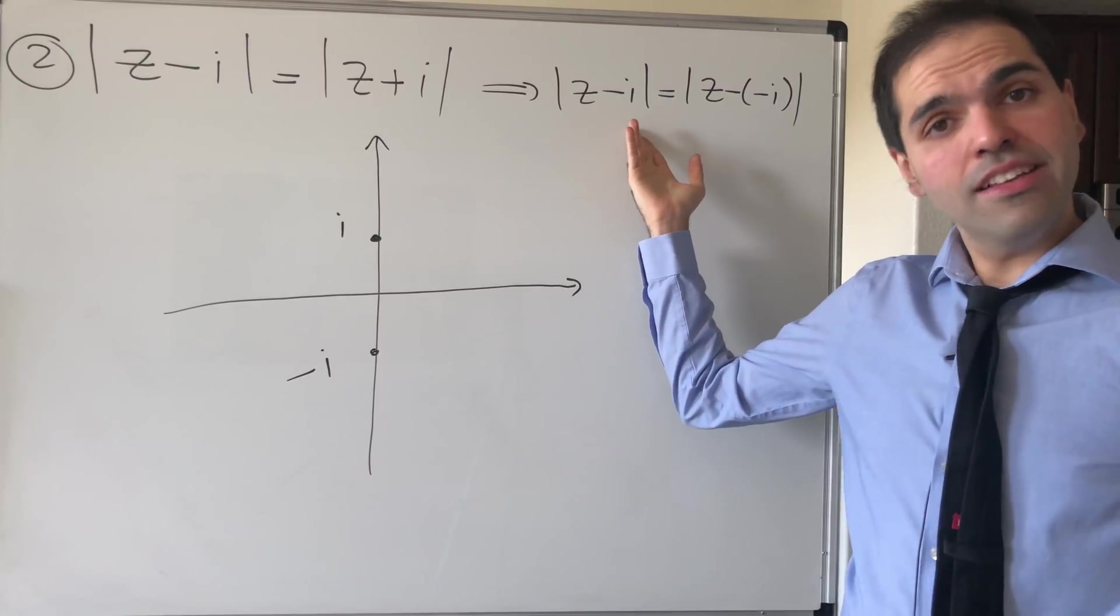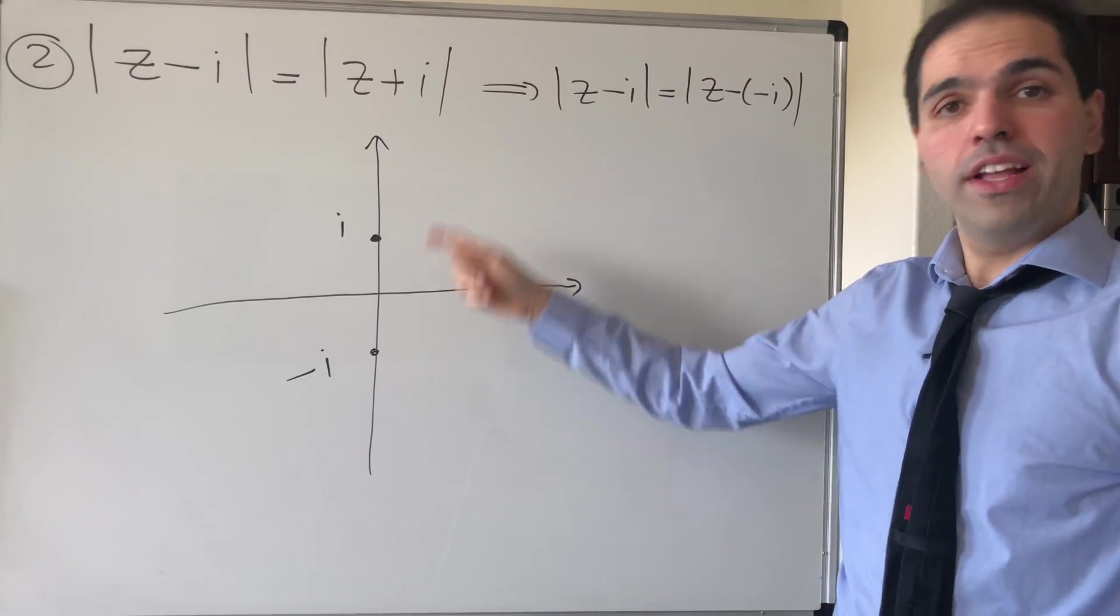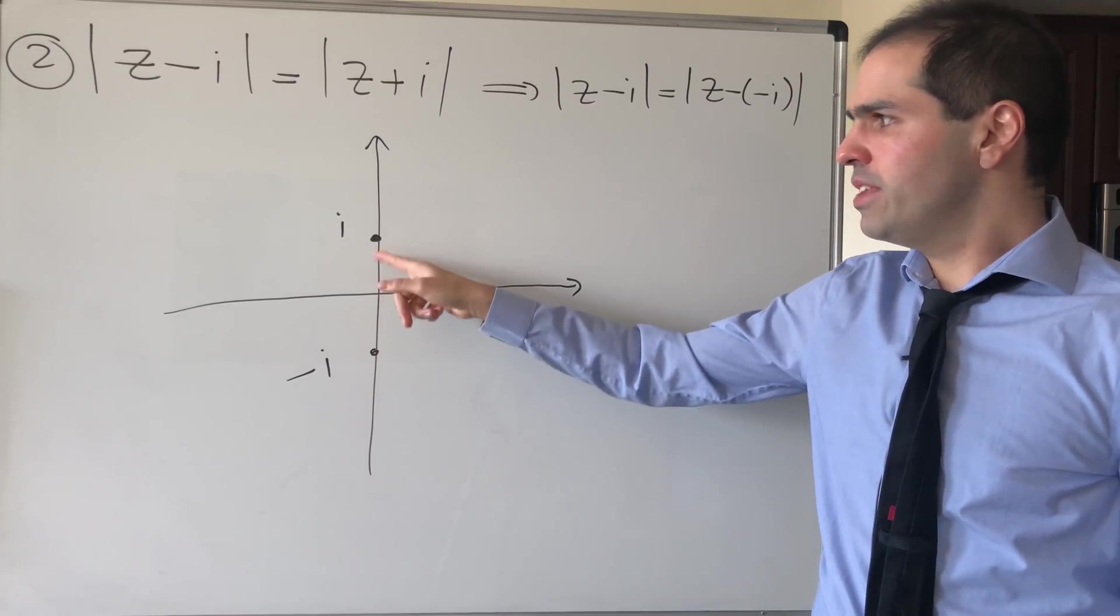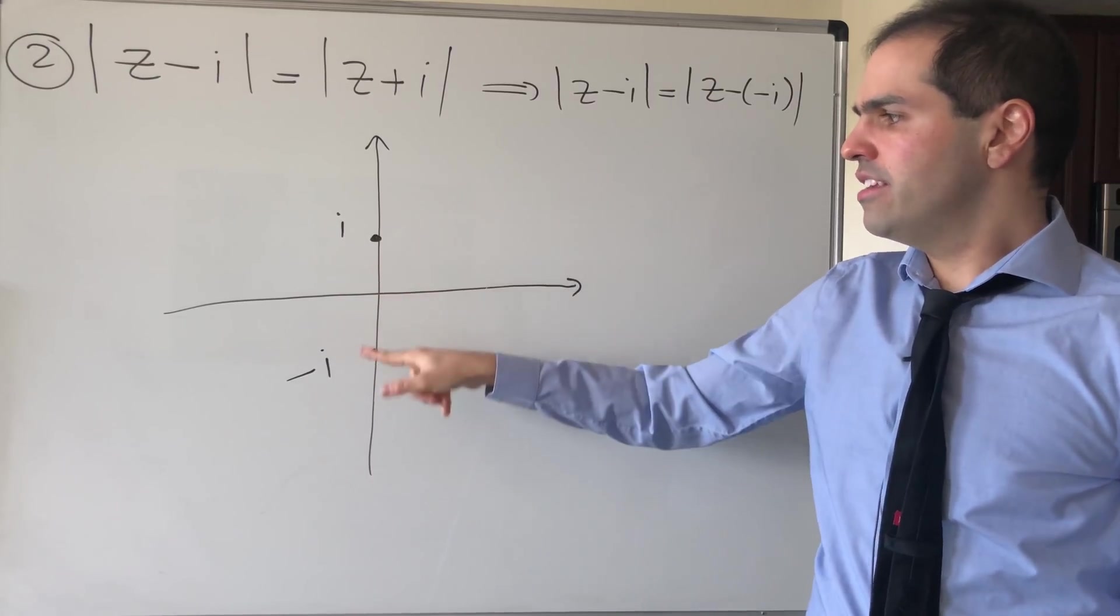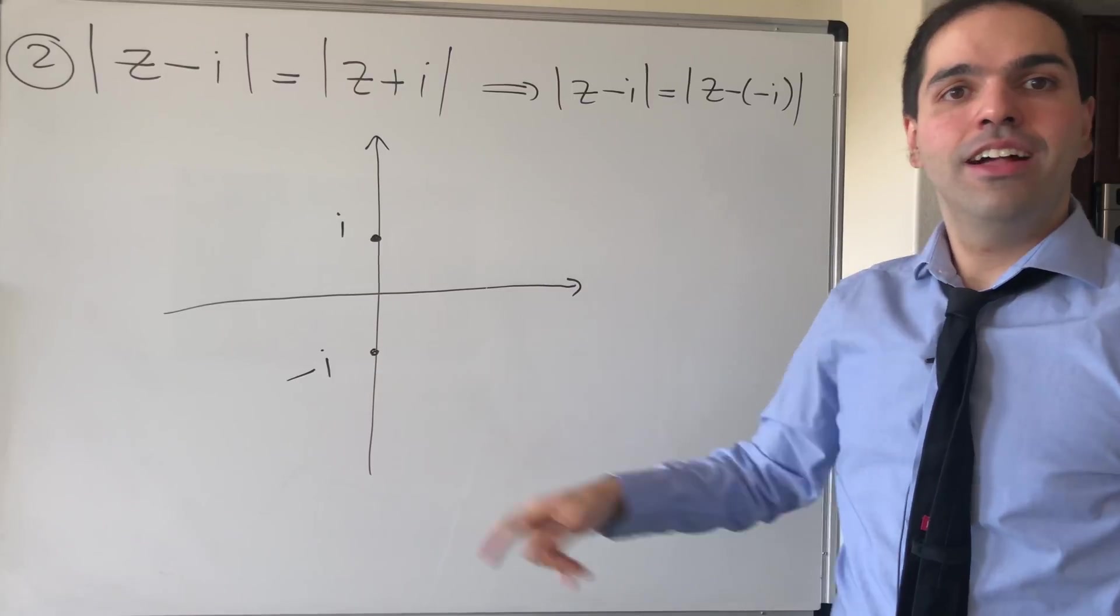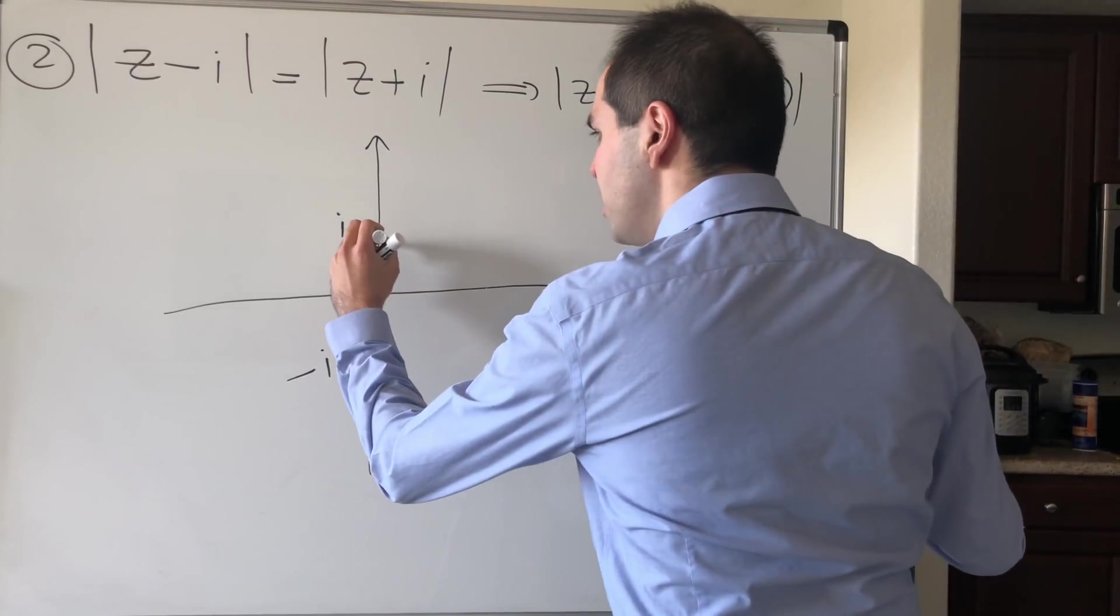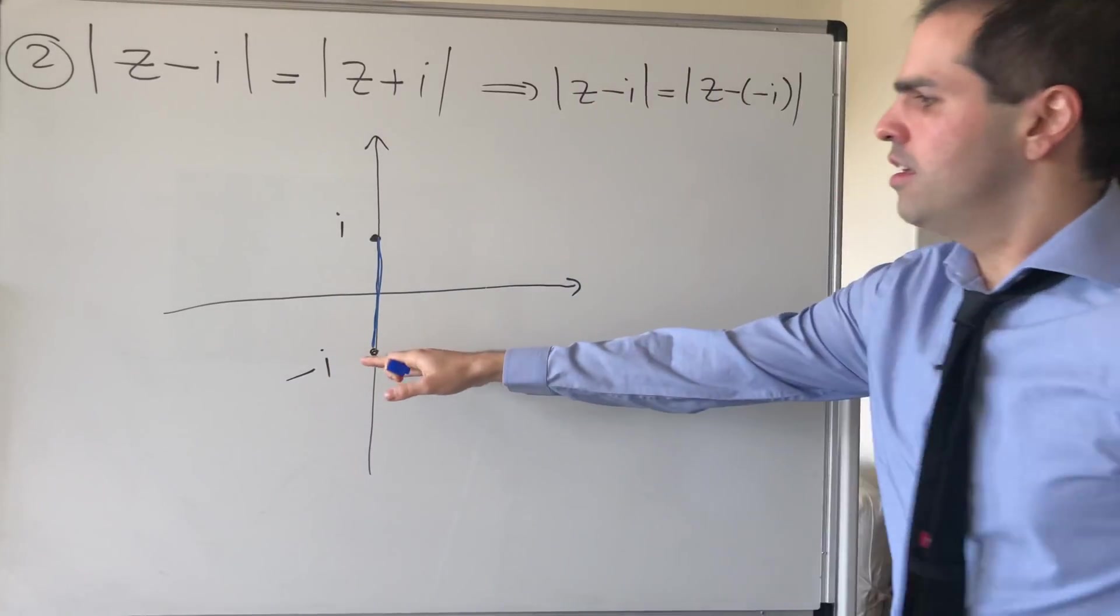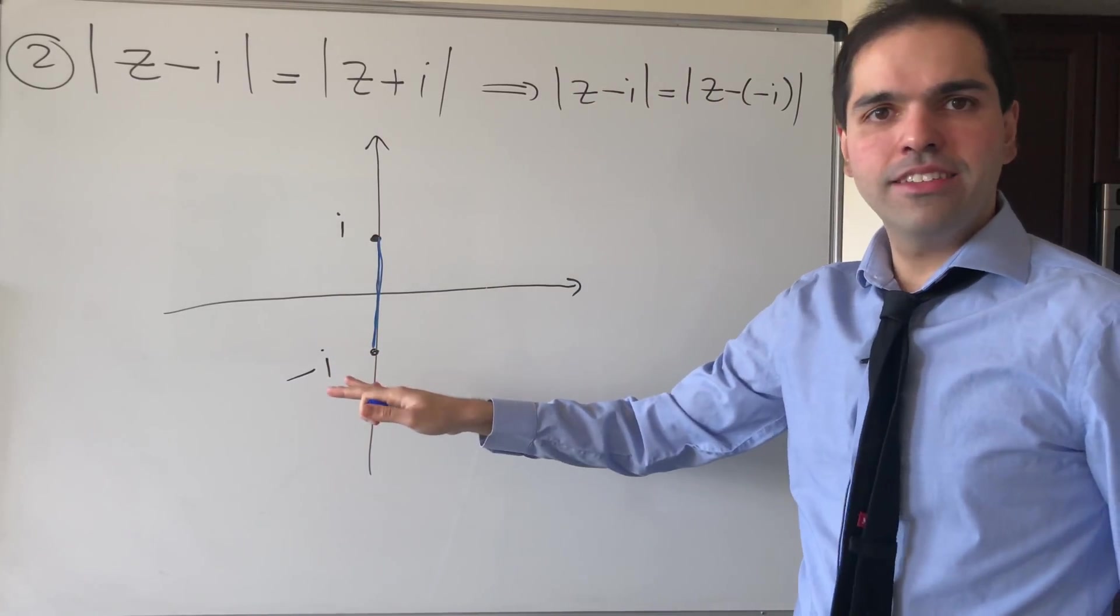So, you're really asking yourselves, which points in the complex plane have the property that they're the same distance away from i as they are from minus i? And, well, if you remember some high school geometry, consider the segment connecting i and minus i.